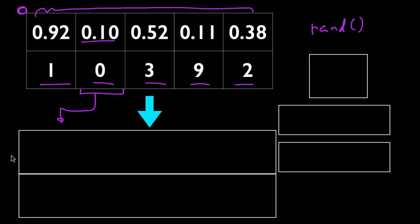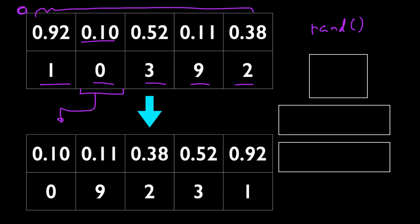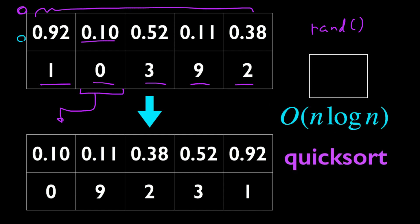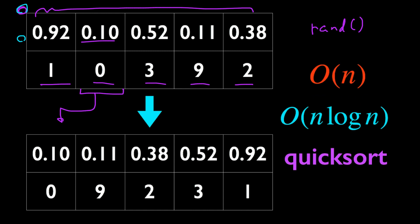So after that, our array will look like this. Now, to sort this array with these random keys, we could use any sorting algorithm. If we use the O(n log n) sorting algorithm such as quicksort, this whole solution would take O(n log n) in time. And another thing to note here is that we need some extra space to store these randomly generated values — specifically, O(n) in extra space.